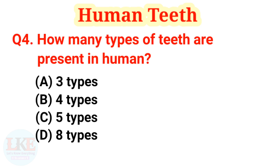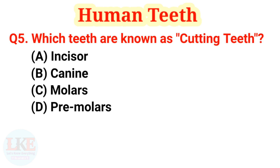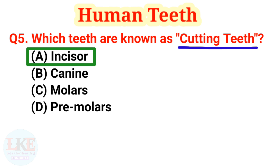Question number 4: how many types of teeth are present in humans? The right answer is option B, four types. Question number 5: which teeth are known as cutting teeth? The right answer is option A, incisors. Incisor teeth at the front of our mouth are the sharp teeth that help us to bite food and cut it into smaller pieces.